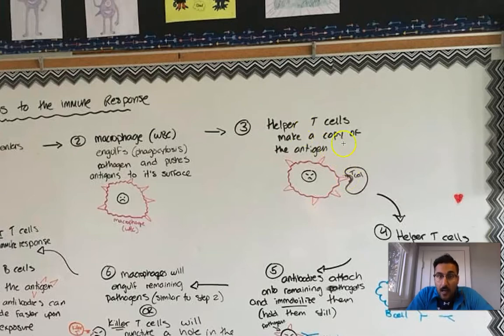So helper T cells make a copy of the antigen. So there's my helper T cell, this black looking blob here, and it's interacting with the antigen, and it's going to copy the antigen that the macrophage has found from the pathogen, and it's going to make more antigens.